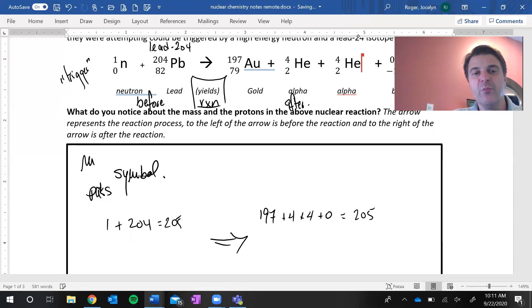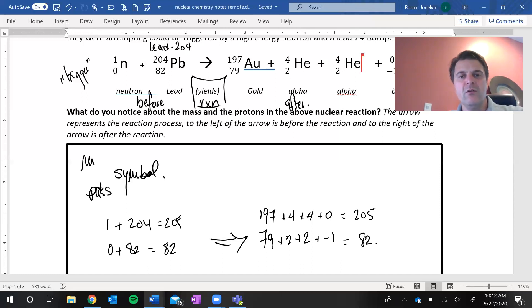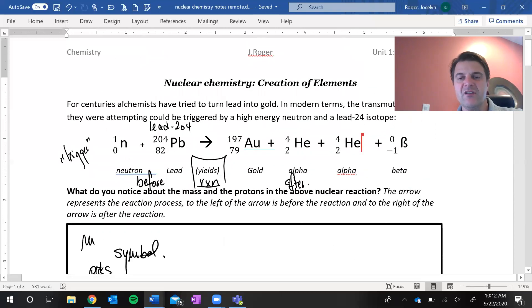We can look at the number of protons. Before the reaction, we had 0 and 82, so we had a total number of 82 protons. On the other side, we have 79 and a 2 and a 2 and a negative 1 for a total of 82. So the charge hasn't changed, the nuclear charge is still at 82. And the weight, the mass of it all hasn't changed either.